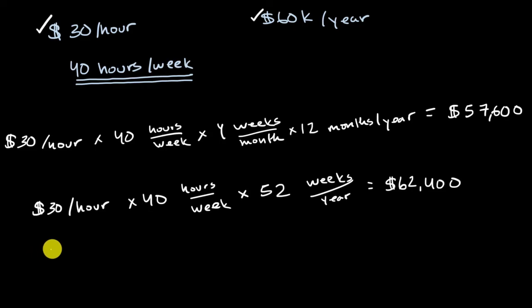So the big takeaway from this video is if you're trying to convert between hourly and annual, remember, don't just estimate how many weeks are in a month and then multiply by 12 months in a year. Or if you're going the other way, divide by 12 months and then divide by four weeks. Think about multiplying by 52 weeks in a year, or if you're going from annual to hourly, think about dividing by 52 weeks in a year.